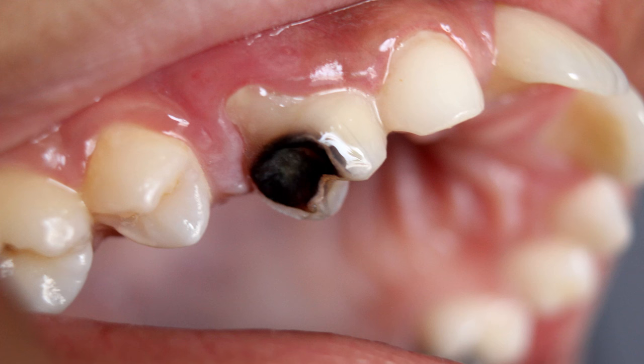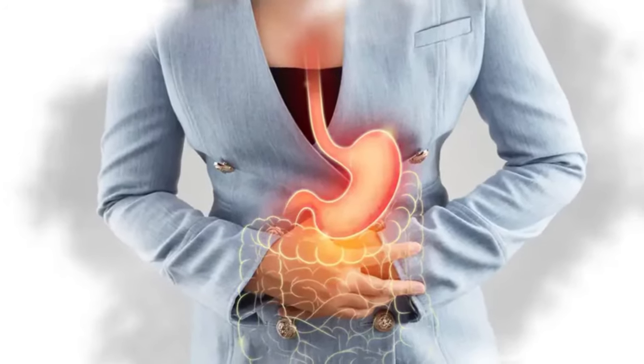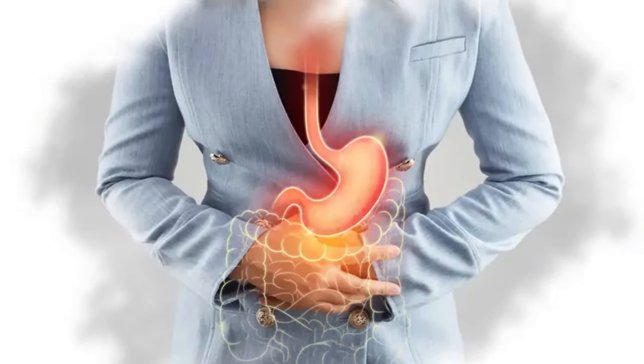A cavity can only begin in a tooth that's lost its strength, that's lost enamel minerals. Tooth enamel is kind of like a skeleton, a structure like a honeycomb, packed with minerals in between all of the spaces. The problems begin when you lose those minerals from those spaces — they get dissolved out of your tooth enamel by any kind of acidity: from foods, from snacking, from all kinds of things, including the acids produced by bacteria.